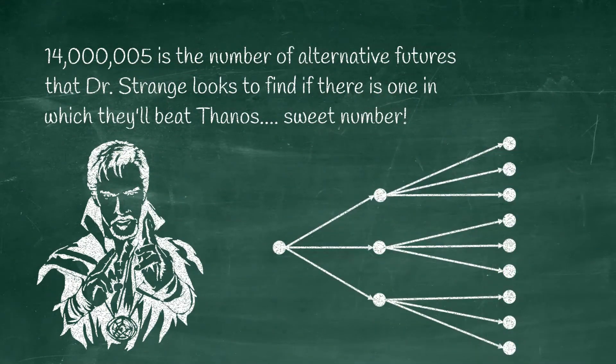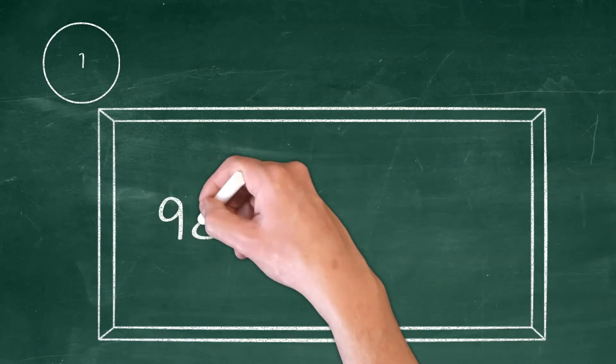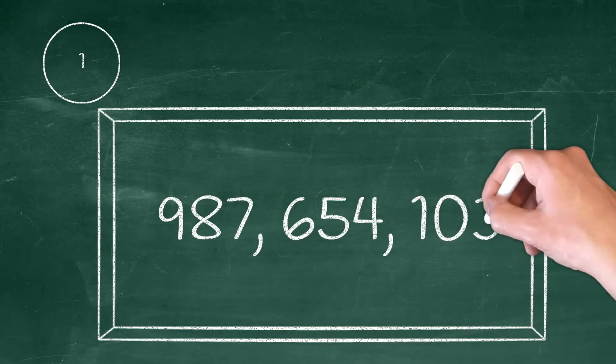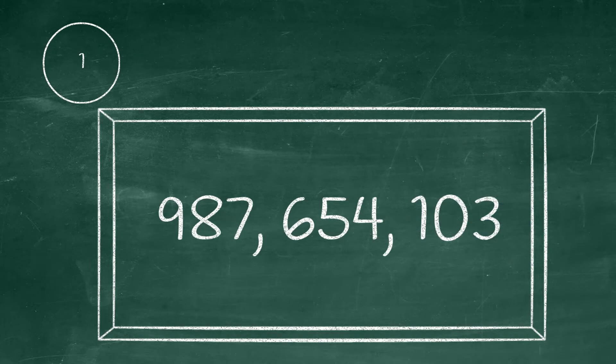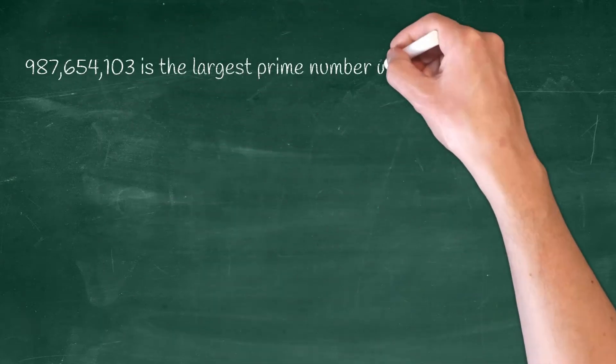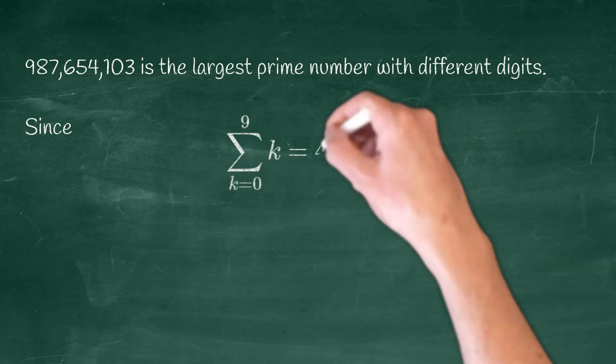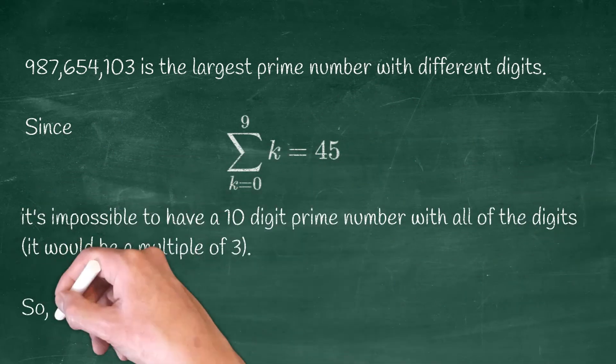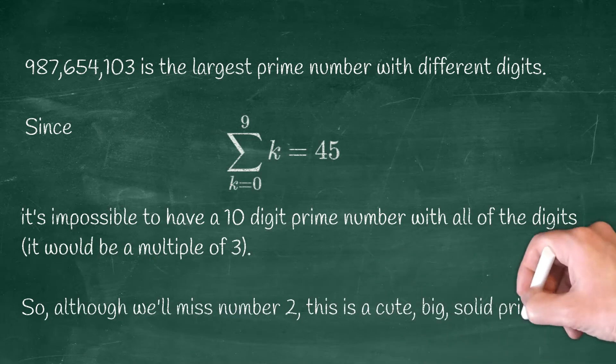987 million, 654 thousand, 103. This is the largest prime number with all different digits. We can't put in the number two, but still a cool number.